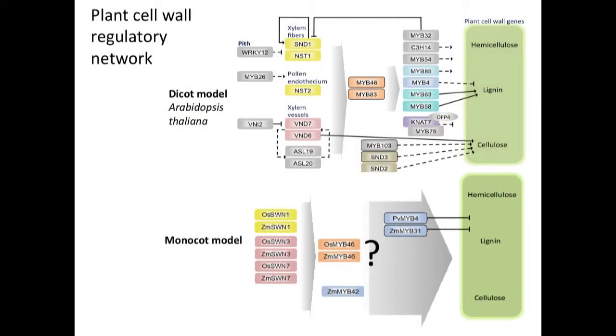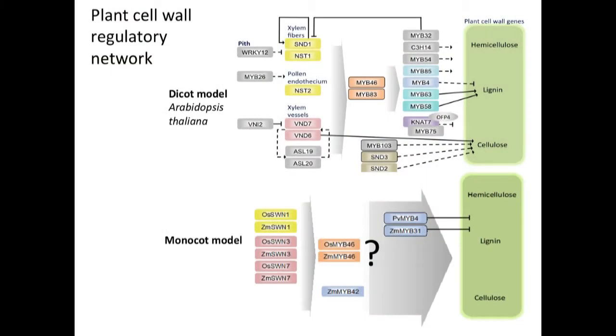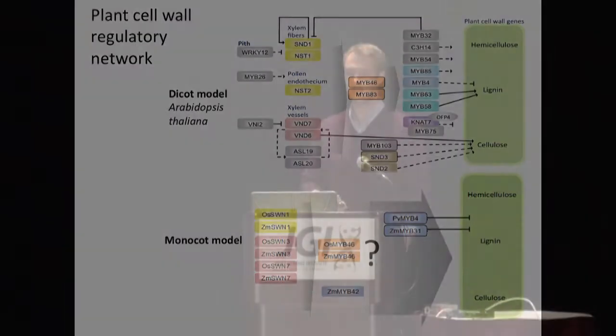In understanding the deposition of cell wall, this system is best worked out in Arabidopsis. We've seen that there's a hierarchy of feedforward loops involving a variety of transcription factors that initiate cascades and also interact directly with cell wall biosynthetic genes to control deposition of cell wall polymers. In Arabidopsis as a dicot model this is fairly well established. However, in the monocots and grasses we don't have the same level of resolution, and our lab is really interested in filling out this model to the extent of or greater than Arabidopsis.